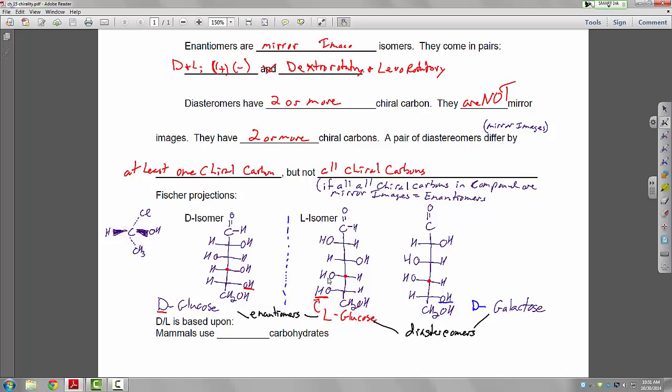Mammals use D-carbohydrates, so all naturally occurring carbohydrates are the D-enantiomer.